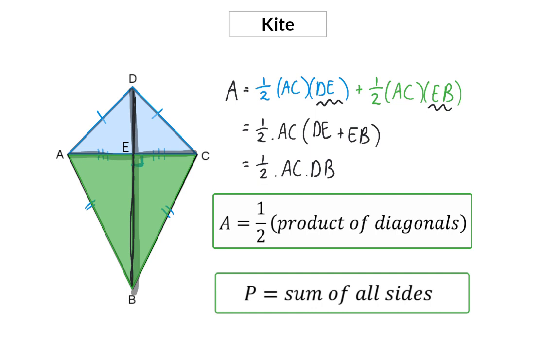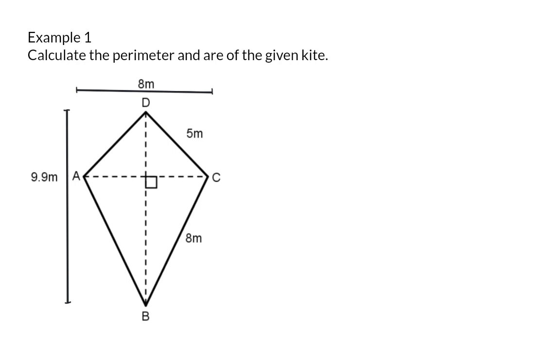Let's have a look at a few examples. Example 1: Calculate the perimeter and area of the given kite. For the perimeter we already have all the information, because we know that there are two pairs of sides that are equal in length, and that means we have two sides of 5 meters and two sides of 8 meters. This will give us a perimeter of 26 meters.